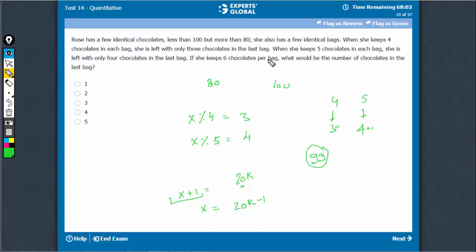Now, what is the question? If she keeps 6 per bag, how many will she be left with? 99 when divided by 6 will give you 3 remainders. 96 and 3 remainders, the answer is 3.